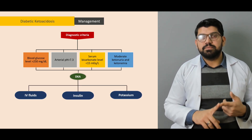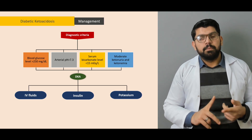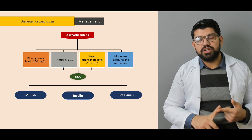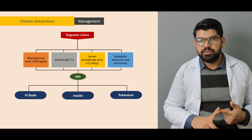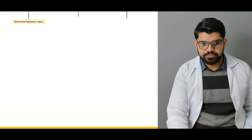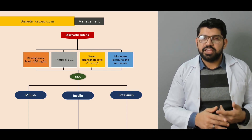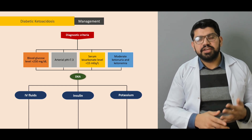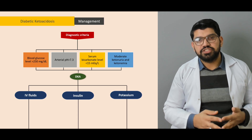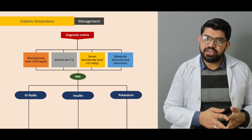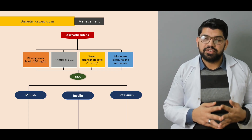In DKA, the primary therapy is IV fluids, insulin, and managing potassium. IV fluids are the treatment of choice because of severe dehydration. Insulin can be given subcutaneously or IV, but due to dehydration, subcutaneous is not recommended as the effect would be delayed. It is better to give IV insulin boluses initially, then a regular insulin infusion at a significant rate per kg to achieve a meaningful decrease in blood sugar levels.